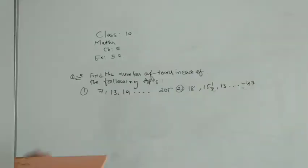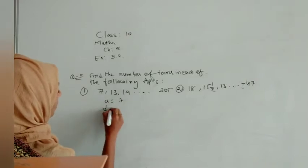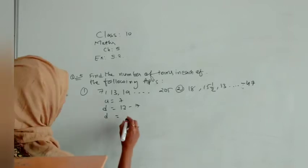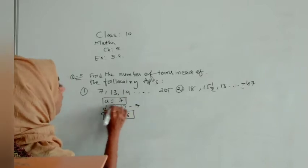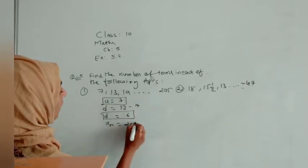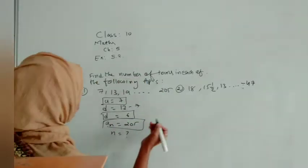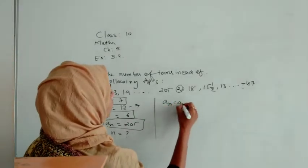Hello everyone. Question number 5: find the number of terms in each of the following APs. So let us solve it. Here 2 APs are given to us and we have to solve it by using our method which we did in fourth question. The similar method will go over here. So here a is given as 7, difference we will find: 13 minus 7, so difference we are getting is 6.